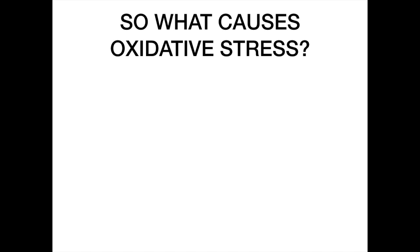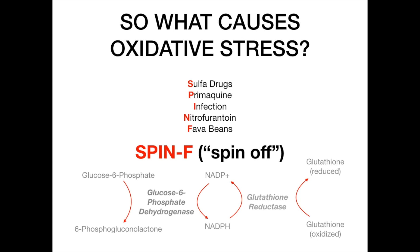What causes oxidative stress? There are several causes: sulfa drugs, the drug primaquine, infections or any illness, nitrofurantoin (another antibiotic), and fava beans. To remember these, use the mnemonic SPIN-F: S for sulfa, P for primaquine, I for infection, N for nitrofurantoin, and F for fava beans. The spinning reminds you of the cyclical wheels of the HMP shunt and the glutathione reductase pathway.